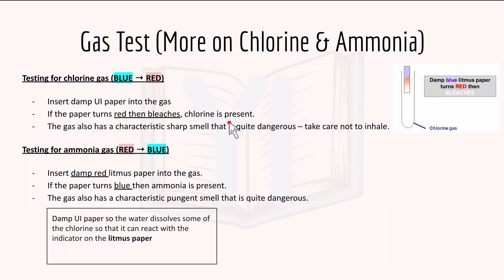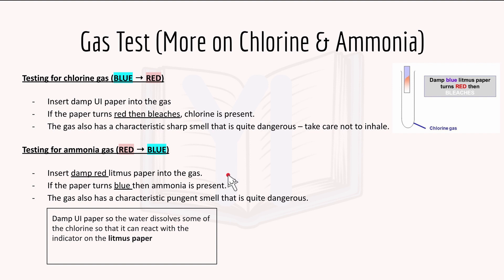Here's more on chlorine and ammonia. For the chlorine gas test, insert damp litmus paper or universal indicator paper into the gas or test tube. If the paper turns red then bleaches, chlorine is present. The gas also has a characteristic sharp smell that is quite dangerous. For ammonia, insert damp red litmus paper - if the paper turns blue, ammonia is present. It also has a characteristic smell that is quite dangerous. We need damp paper so that the water can dissolve some of the gas so it can react with the indicator on the litmus paper.